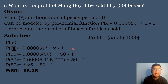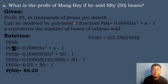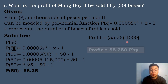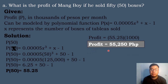To get the actual profit, we multiply 55.25 by 1,000 because the profit is in thousands of pesos per month. So P(50) = 55.25 × 1,000 = 55,250 pesos. Therefore, the profit of Mangboi if he sold 50 boxes is equal to 55,250 pesos.